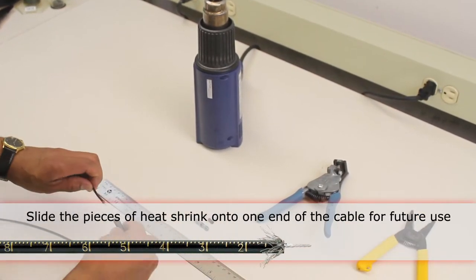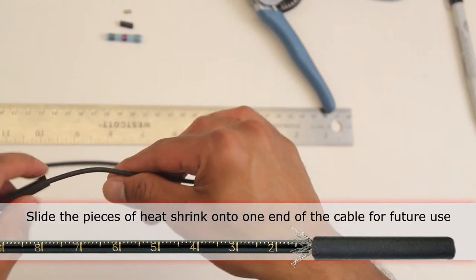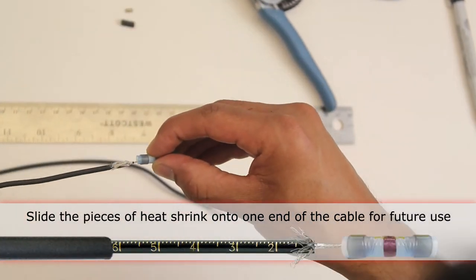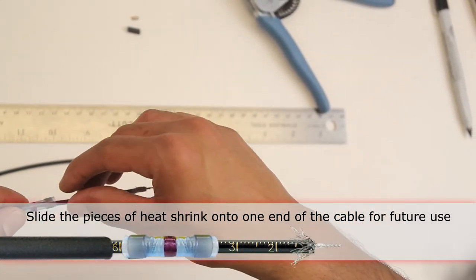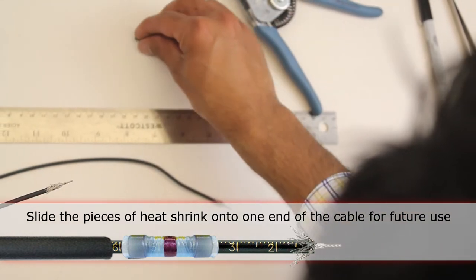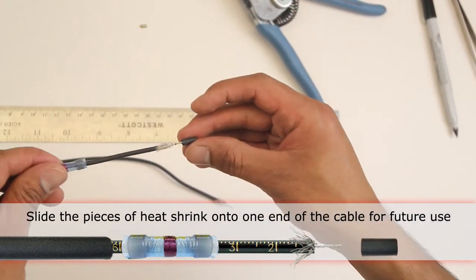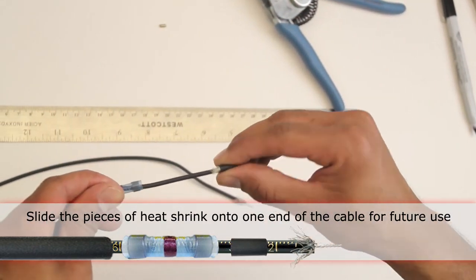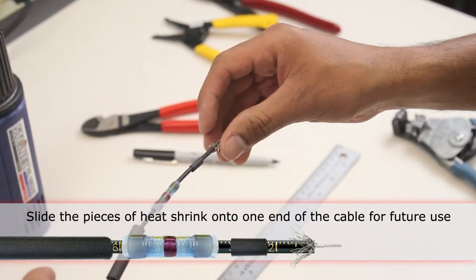Slide the pieces of heat shrink over. First with the quarter inch, and the heat shrink butt splice tube. Then we'll slide a one-eighth piece of heat shrink over everything else. So it's three pieces of heat shrink over that.